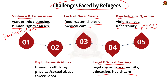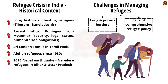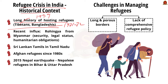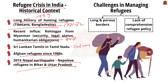India faces its own refugee challenges — both historical and contemporary. India has long hosted refugees including people from Tibet since the 1959 Tibetan uprising, and people from Bangladesh following the 1971 war. More recently, India has seen an influx of Rohingya refugees fleeing persecution in Myanmar. During the Sri Lankan civil war, many Tamil people sought asylum in India, particularly in Tamil Nadu. Since the 1980s, India has also hosted people from Afghanistan, and from 2015, the Nepal earthquake forced thousands of Nepalis to flee into India.